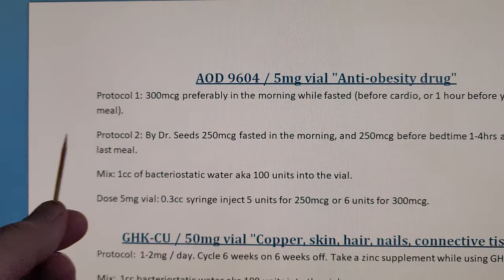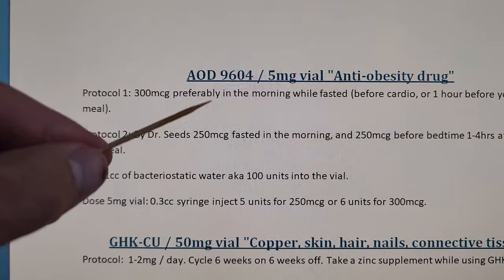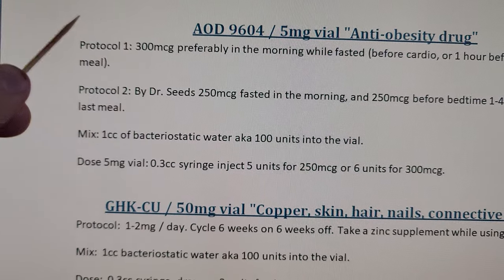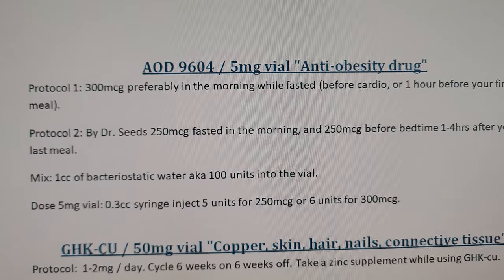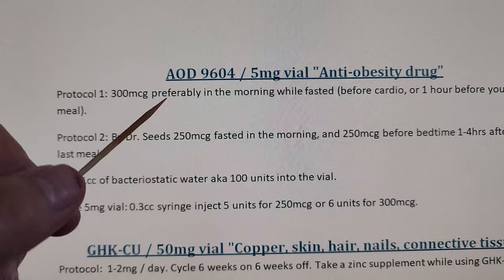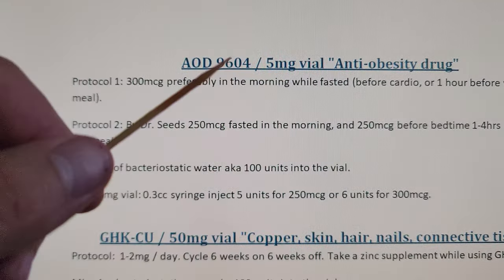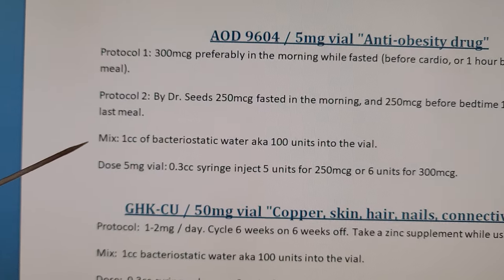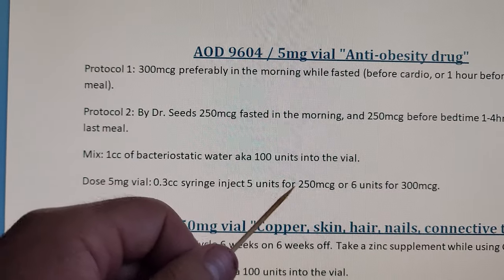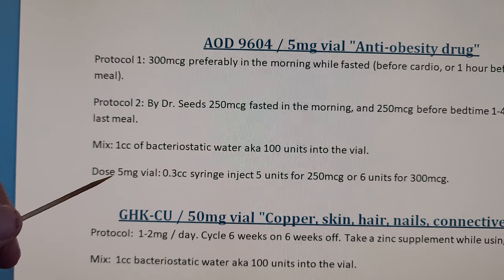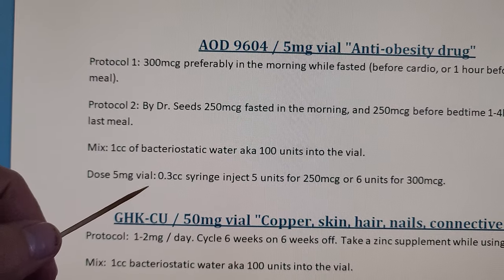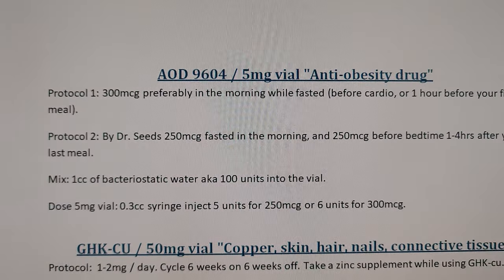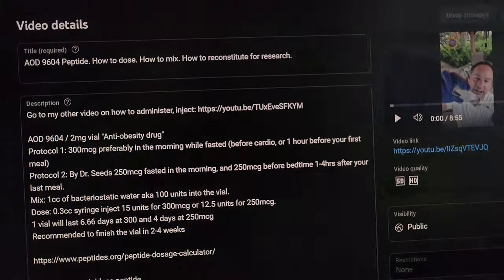Taking it in the morning works for me, but as long as you're fasted — whether that's in the middle of the day or hours without food — you can utilize the AOD. Sometimes I get up around 3 AM, come into the kitchen, and do some research. So what we're going to do: mix one CC of bacteriostatic water — 100 units — into the vial. Our vial has five milligrams, so we inject five units for 250 micrograms and six units for 300 micrograms.